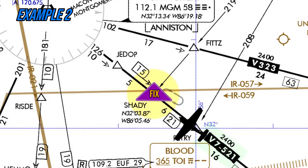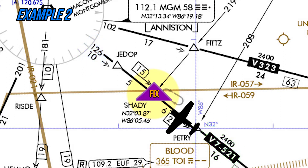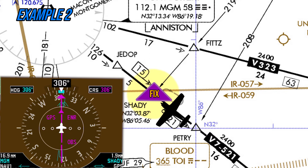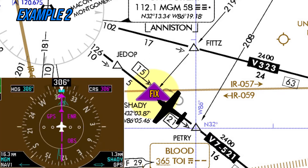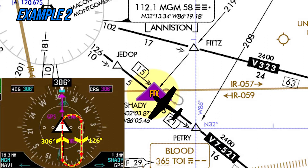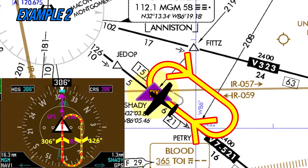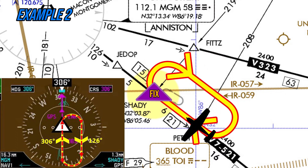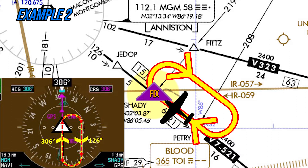The published hold at Shady is along Victor 7-521, which is the 126 radial from the Montgomery Vortac. Since the pilot is flying to the MGM Vortac, their inbound heading for the hold would be the reciprocal of 126, which is 306. While approaching Shady, the pilot visualizes the hold on their HSI and determines they should make a direct entry since they are flying the same general direction as the inbound leg. When the pilot reaches Shady, they will conduct a direct entry, make a right standard rate turn, fly the outbound leg, make another right standard rate turn, report established on the hold, and conduct a timed right turn hold with 1-minute legs until 1550 Zulu.